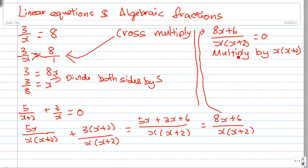Now, 8x plus 6 over x(x plus 2), if you multiply it by x(x plus 2), you will get 8x plus 6 because they cancel each other out. And 0, if you multiply it by x(x plus 2), you will get 0. So, 8x equals to negative 6, x is negative 6 over 8, x is negative 3 quarter.